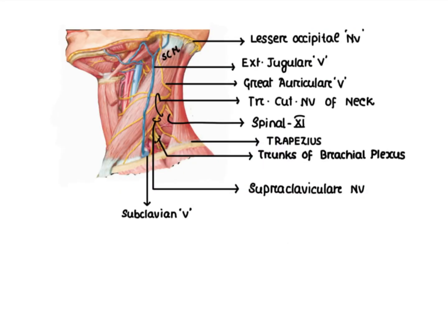In the diagram you can see the sternocleidomastoid muscle, and this is the angle of the jaw. Near the angle of the jaw, there is a confluence of the posterior division of the retromandibular vein and the posterior auricular vein coming in, and both join to form the external jugular vein.